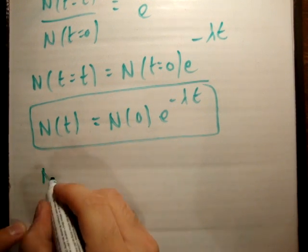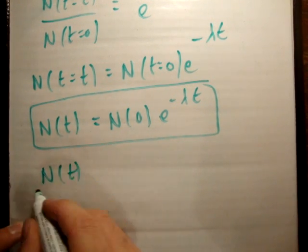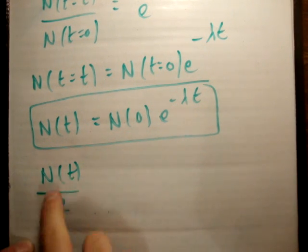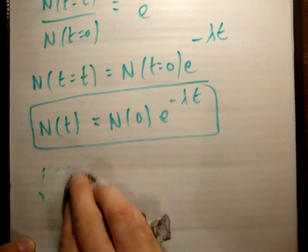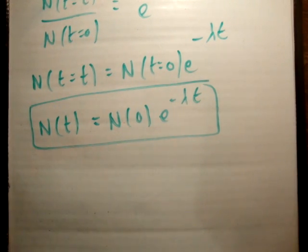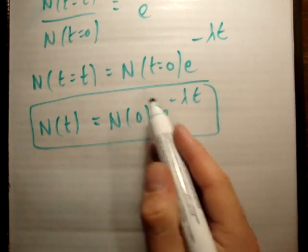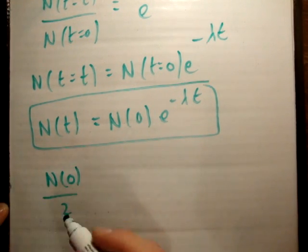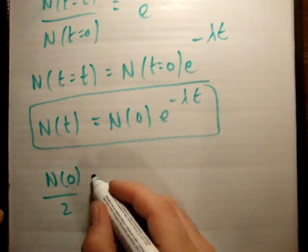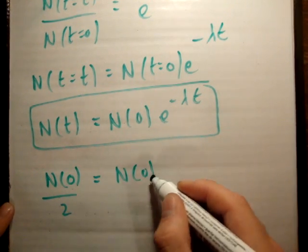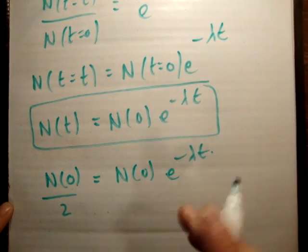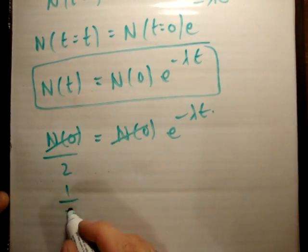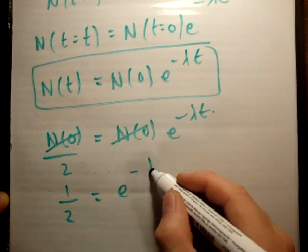The half-life is when you have n(t) over 2 — half the number of atoms you started with. So we set n0 over 2 equal to n0 times e to the minus lambda·t. We can cancel n0, giving: one half equals e to the minus lambda·t.